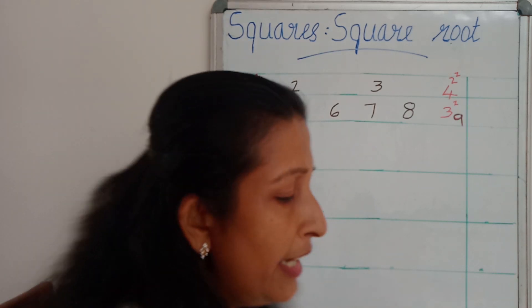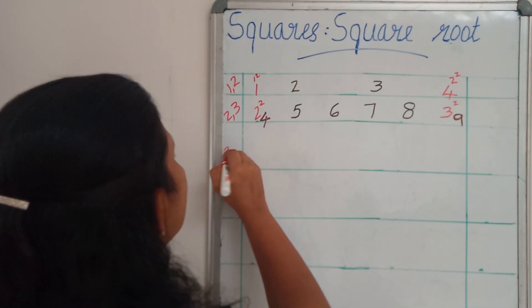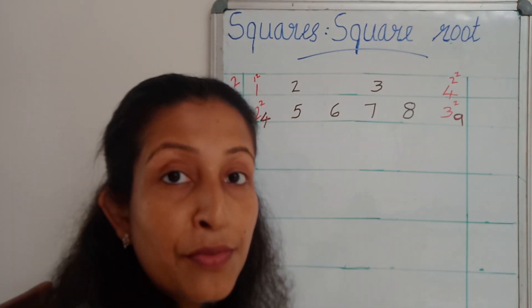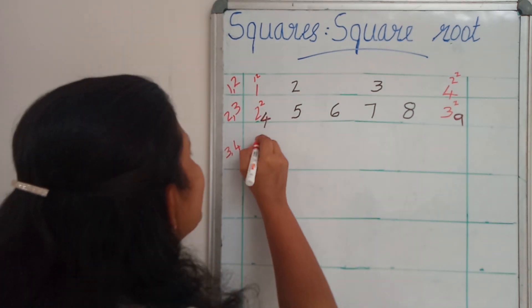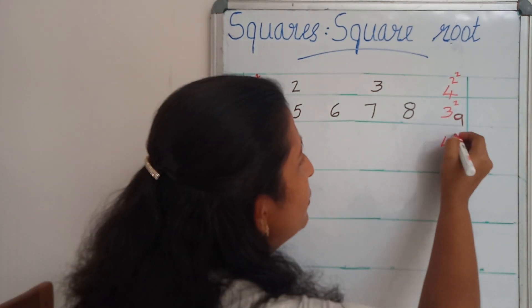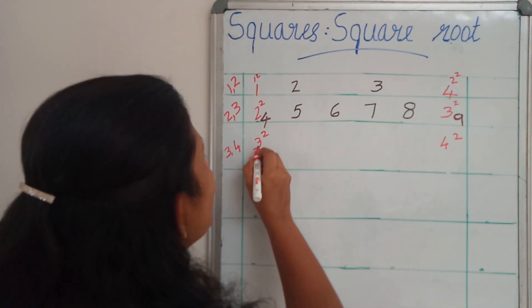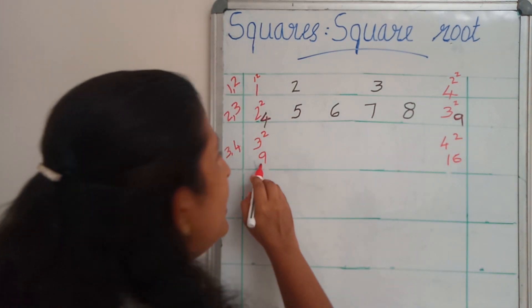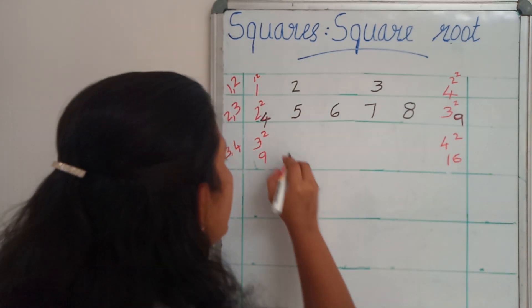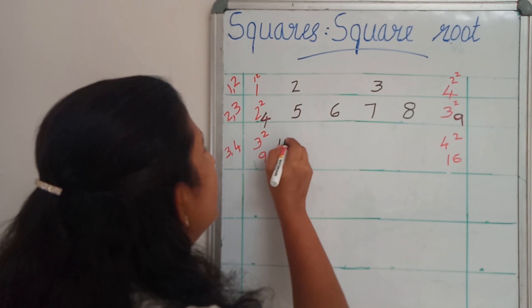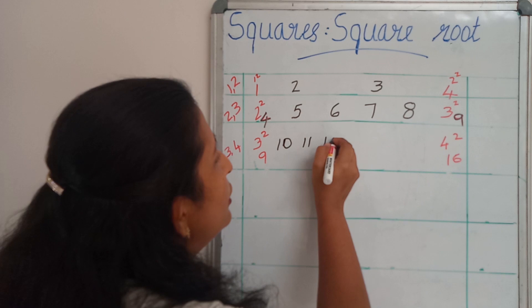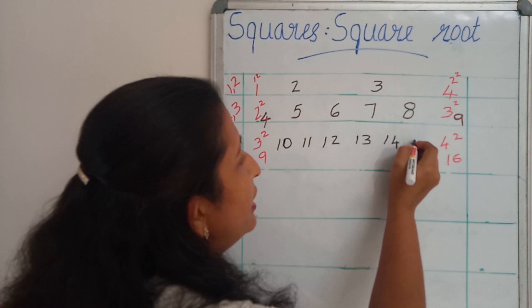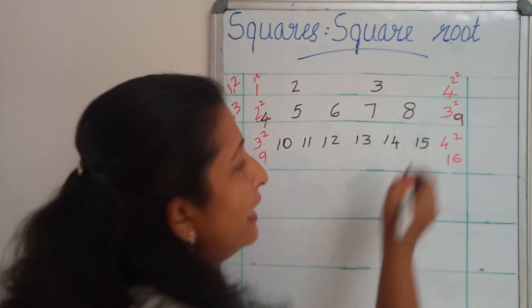Next, I am going to take the natural numbers as 3 and 4. Find the square: 3 square, then 4 square. 3 square is 9 and 4 square is 16. In between 9 and 16: 10, 11, 12, 13, 14, then 15.